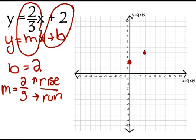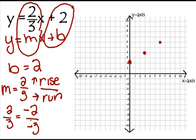And I can do that again — up 2 and run 3. Now, an interesting thing is 2 thirds is a positive fraction. I could also say that's negative 2 over negative 3 — they're the same, because a negative divided by a negative is a positive. So if I start from my y-intercept 2, I would go down 2 and then run negative 3. Do you see that this is going to end up on the same line?